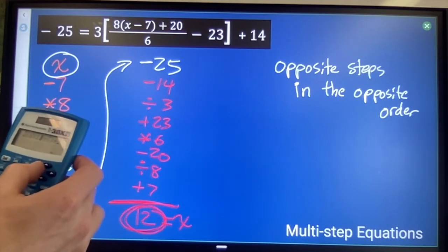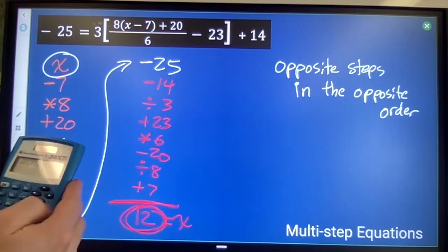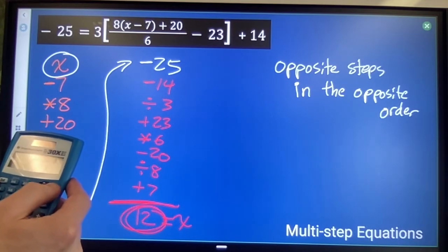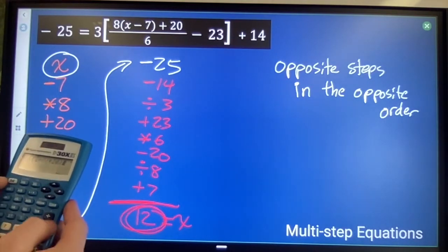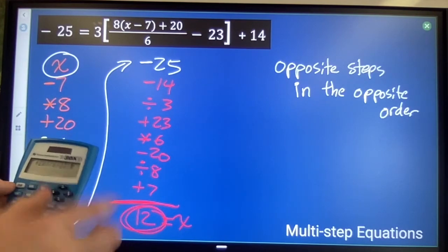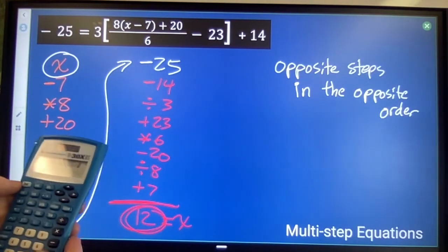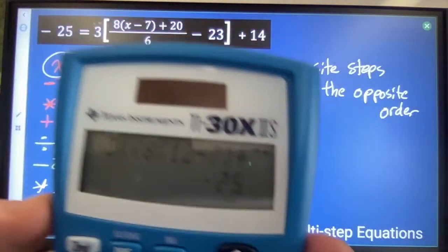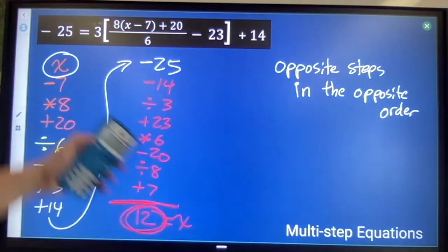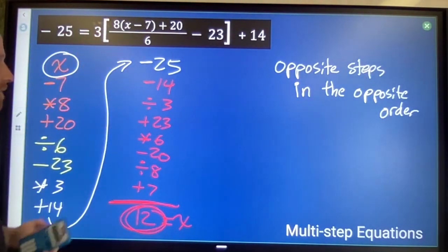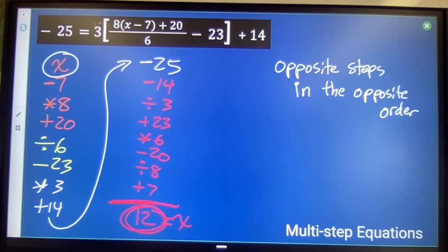I need even one more set of parenthesis to make my fraction. Divide by 6, subtract 23, now close my original parenthesis, plus 14, all that, enter. Negative 25 is what I'm supposed to get. Negative 25 is what I get when I put 12 in for x.